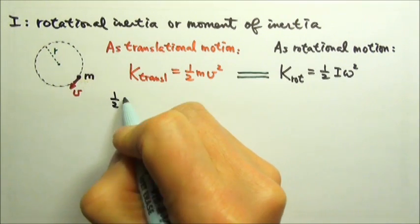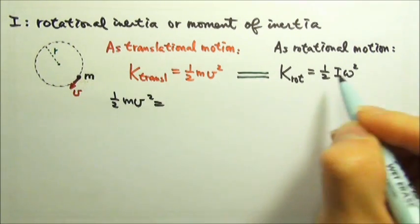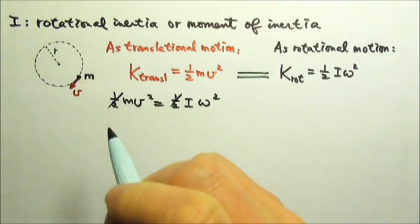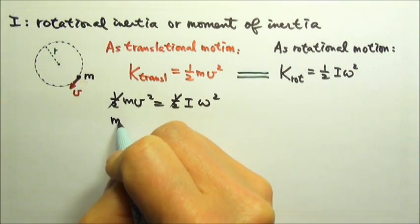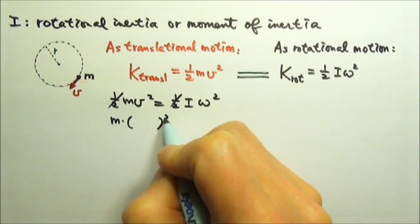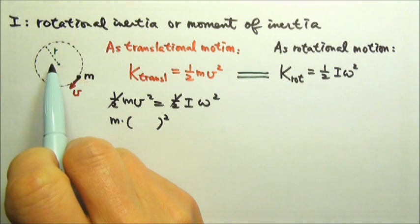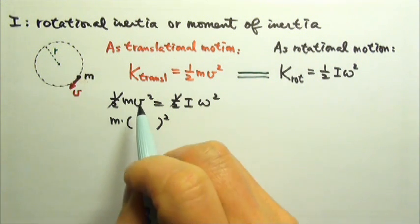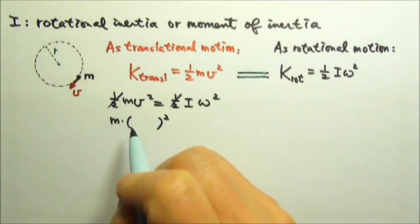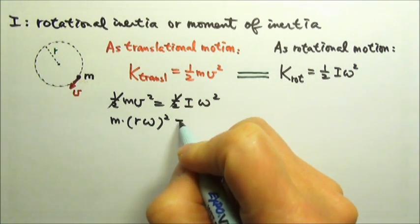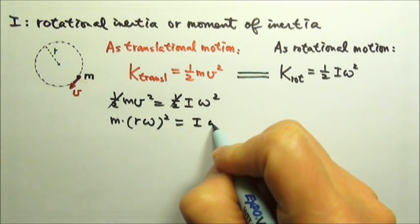So one-half mv squared equals to one-half I omega squared. We can cancel the one-half, and then we have m times v squared. Since this point mass is rotating about a fixed axis, that means the speed equals to r omega, and this equals to I omega squared.